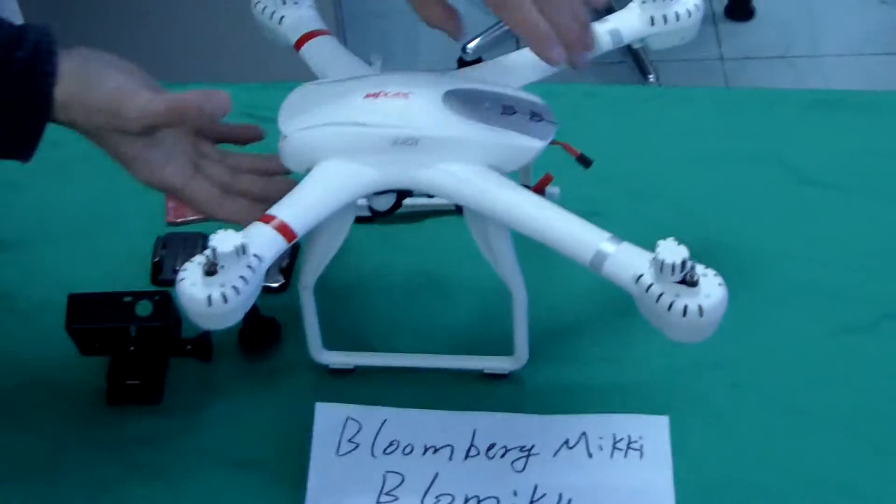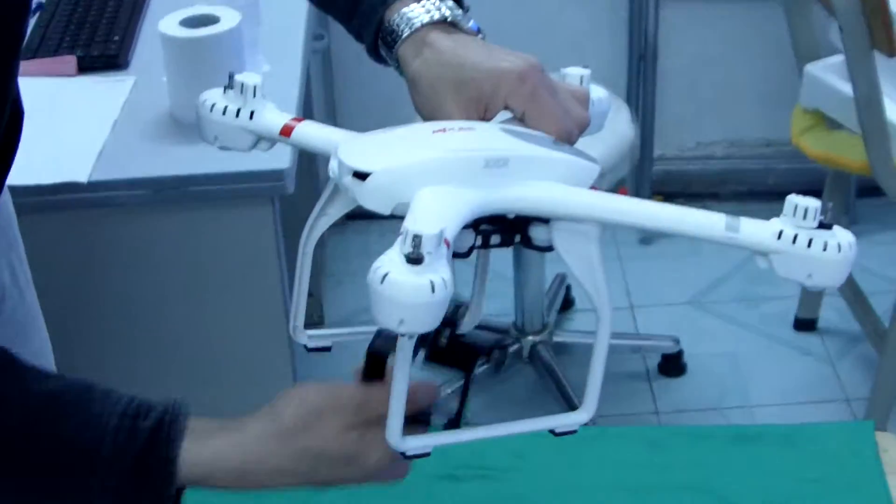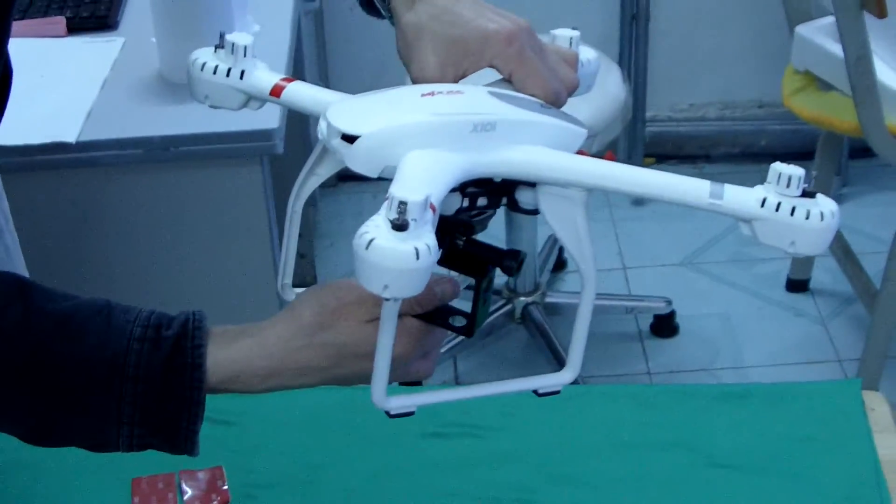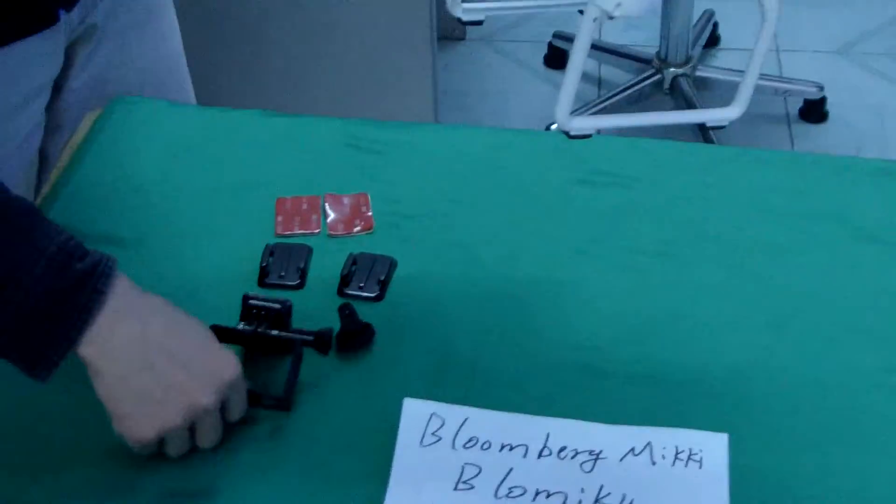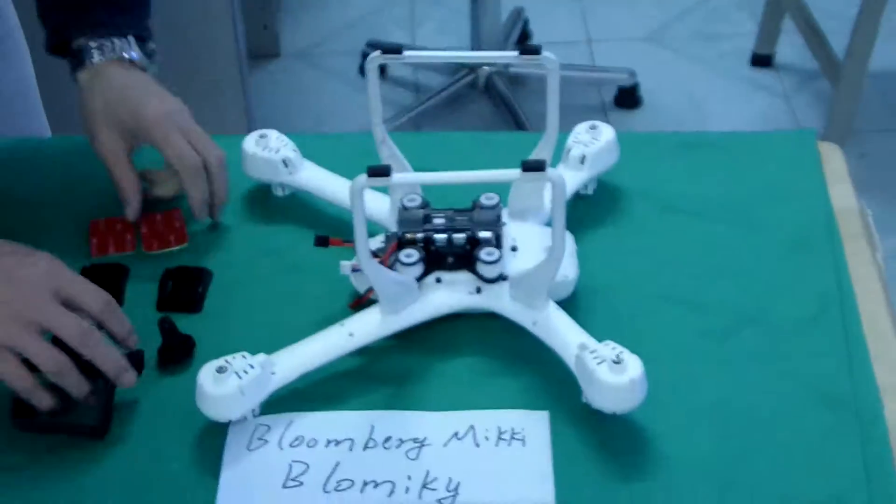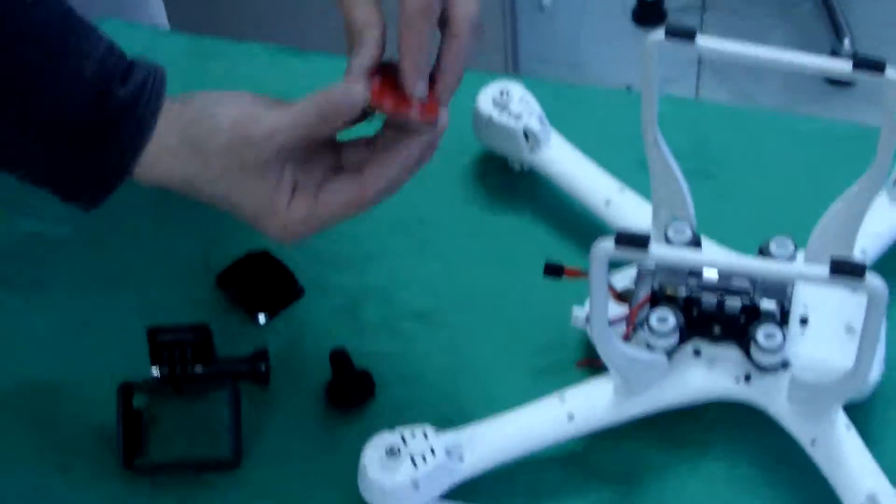Okay, this is the RC helicopter. You can fix your action camera on this. I'll tell you how to do it. First, we send this one, the two sides, this one, two sides.